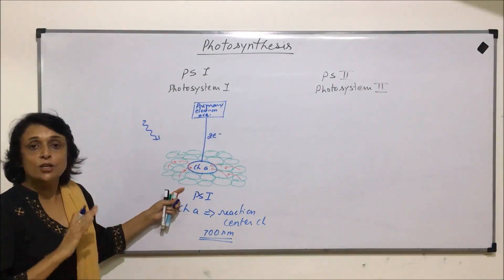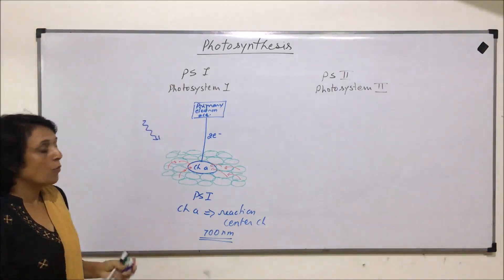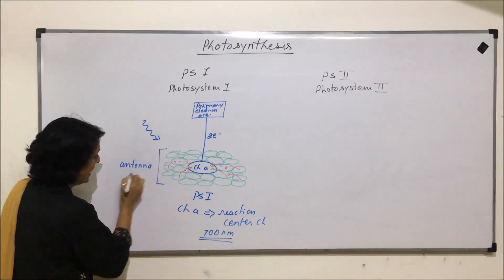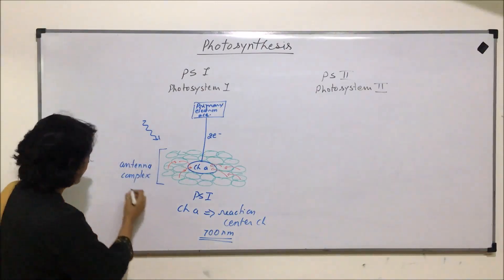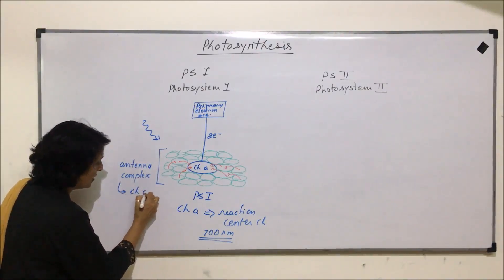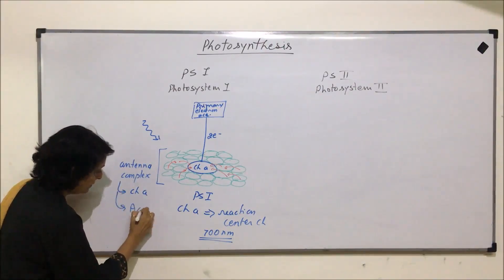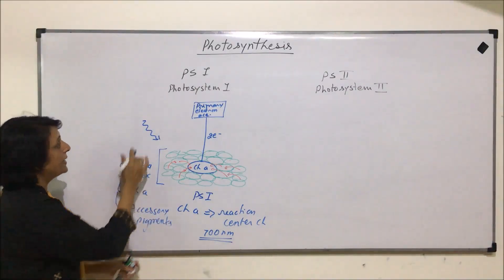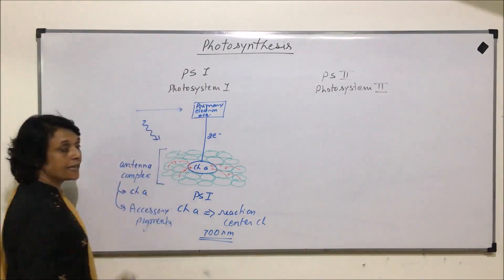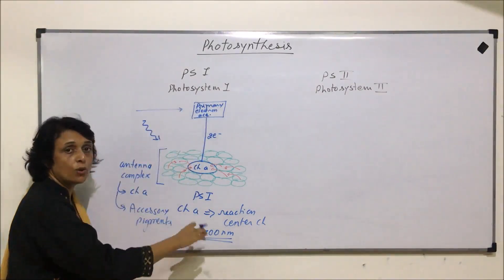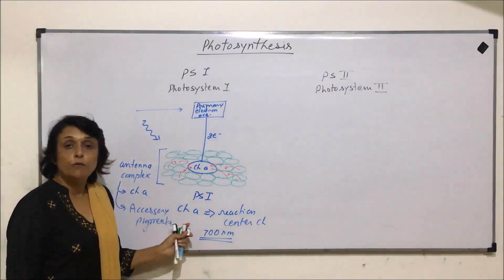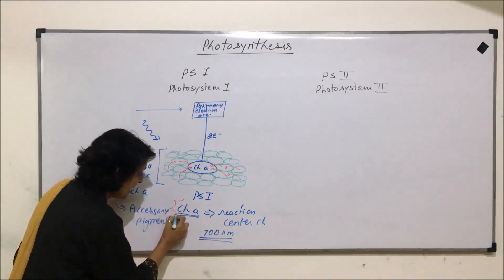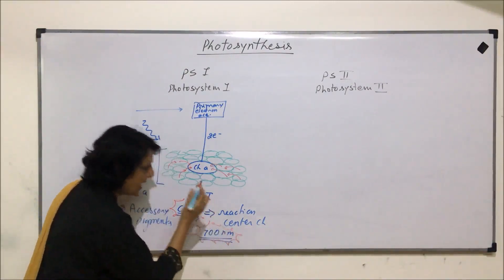This entire unit is known as a photosystem. What are the components of a photosystem? We have the antenna complex, which is made up of two things: the reaction center chlorophyll A and the accessory pigments, plus the primary electron acceptor. This complete unit is photosystem 1. In photosystem 1, the reaction center chlorophyll is always chlorophyll A and it absorbs 700 nanometers.